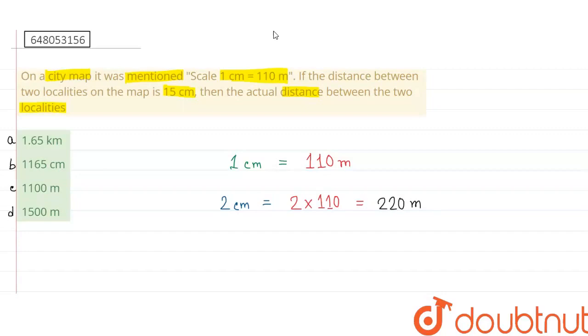ओके, अब आपसे पूछा गया है, कि city map में दो places के बीच में distance 15 cm दिखाया जा रहा है. तो उनके बीच का actual distance क्या होगा? 15 cm.